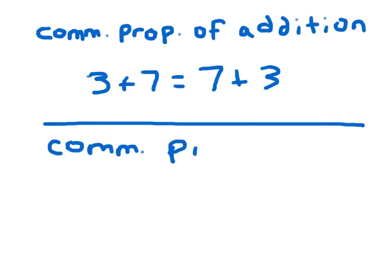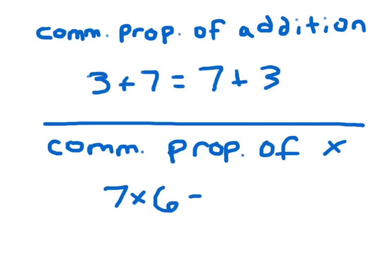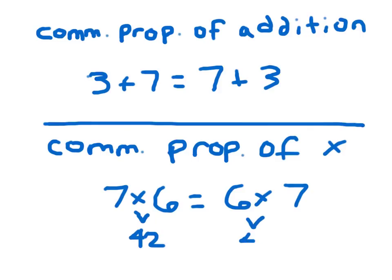For the commutative property of multiplication, we have 7 times 6 equaling 6 times 7. If we change the order of the factors — these are called factors — the product stays the same. That product is 42, and 42 as well. The value of both sides of those equations stays the same. So for the commutative property of multiplication: when you change the order of the factors, the product stays the same.